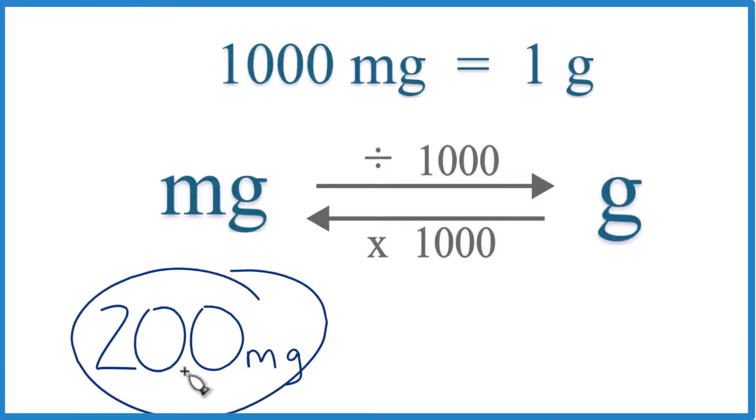Here's how you convert 200 milligrams to grams. So first off, 1,000 milligrams equals one gram, or you could say one gram equals 1,000 milligrams. And we need that to convert from milligrams to grams or grams to milligrams.